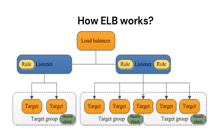Each target group routes requests to one or more registered targets, such as EC2 instances, using the protocol and port number that you specify. You can register a target with multiple target groups. You can configure health checks on a per-target-group basis. Health checks are performed on all targets registered to a target group that is specified in a listener rule.